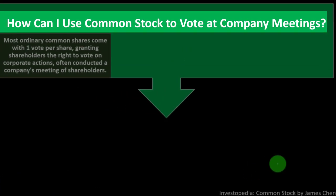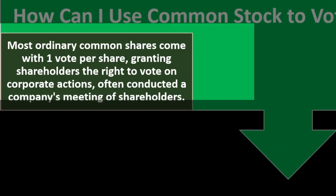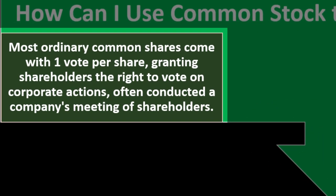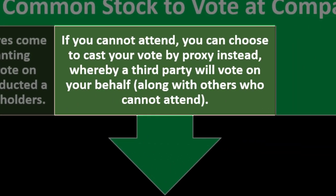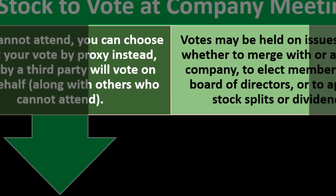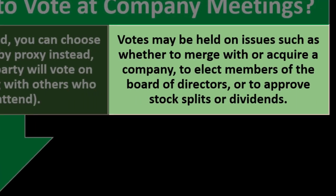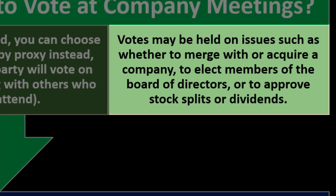How can you use common stock to vote at company meetings? Most ordinary common shares come with one vote per share, granting shareholders the right to vote on corporate actions, often conducted at the company's annual shareholder meeting. If you cannot attend, you can cast your vote by proxy, where a third party votes on your behalf. Votes may be held on issues such as mergers and acquisitions, electing board members, or approving stock splits and dividends.